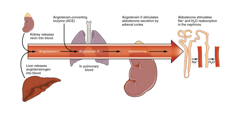Renin combines with angiotensinogen, which is secreted by the liver, resulting in the formation of angiotensin I. Angiotensin I travels in the blood and combines with the angiotensin-converting enzyme, ACE, located in the blood vessels of the lungs. This results in the formation of angiotensin II.